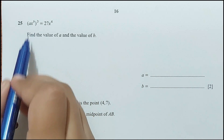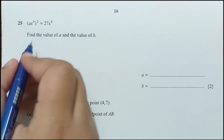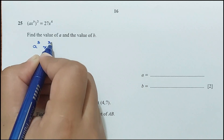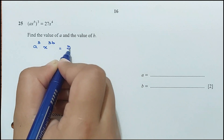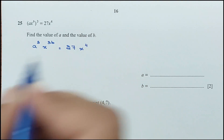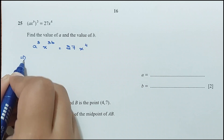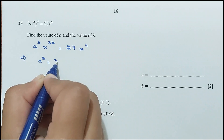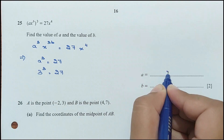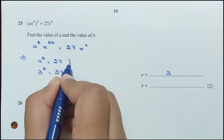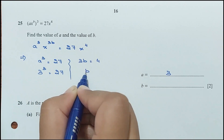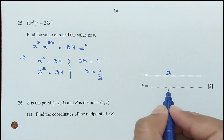Question 25: find the values of A and B given (Ax^B)³ = 27x⁴. Comparing coefficients: A³ = 27, so A = 3. Comparing powers: 3B = 4, so B = 4/3.